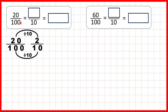So 20 hundredths is equivalent to 2 tenths. We can write 20 hundredths as 0.20, because with a denominator of 100 we need two digits after the decimal point. But since 20 hundredths is equivalent to 2 tenths, we can write 2 tenths as 0.2. We don't need zeros on the end of decimal numbers, because all the zero told us is that we had something equivalent to 2 tenths and 0 hundredths — but 0.2 tells us this as well.